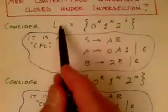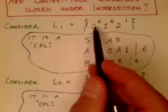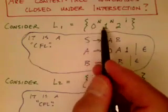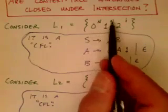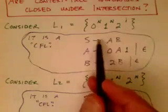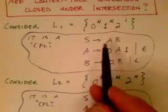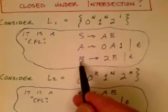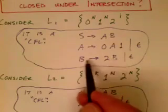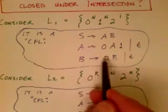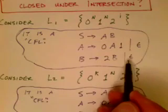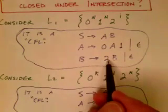The first language we consider is L1, which consists of a bunch of zeros, a bunch of ones, and a bunch of twos, where the number of zeros equals the number of ones: 0^n 1^n 2^i for any number of twos. Here's a context-free grammar to prove it's context-free. The rule B → 2B | ε uses right recursion to generate zero or more twos. So B generates a string of zero or more twos.